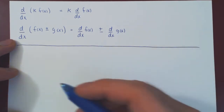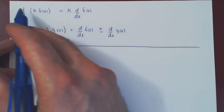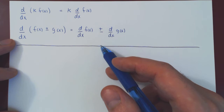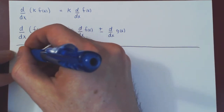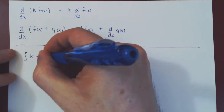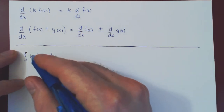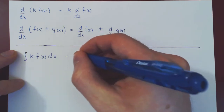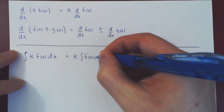Let's look at the simplest one first, which is the mirror image of the constant multiple rule. Suppose we ask to integrate k times f of x dx, where k is a fixed constant. We can pull k outside of the integral and do k times the integral of f of x dx.